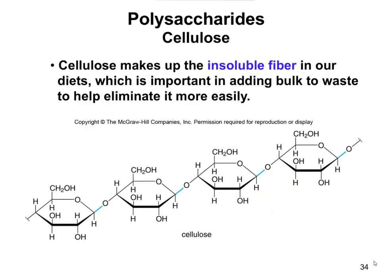That makes cellulose what we refer to as insoluble fiber, because we're not able to digest it. It basically adds bulk to our waste to help eliminate it more easily. You can see here the linkage between a bunch of celluloses. Notice that if I were to circle one of these glycosidic linkages starting at C1 — the initial carbon on the left — the H is down and the O is pointing up, which makes it a beta-glycosidic linkage.